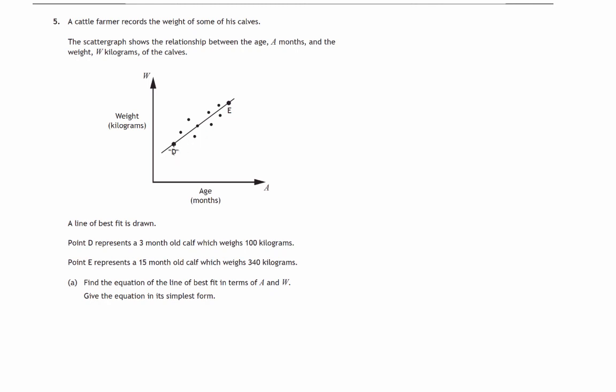For instance, point D we're told represents a three month old calf, that would be three months, and it weighs 100 kilograms. So point D has coordinates (3, 100).